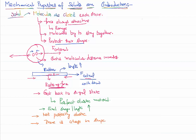How big or how small that change is — that is what we are going to study in elasticity. Elasticity is a property of a solid material which measures how good the material is in coming back to its original state.